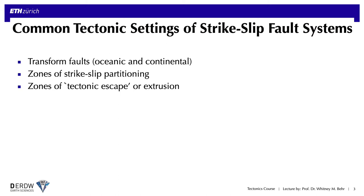Let's start by discussing the common tectonic settings of strike-slip faults. I like to break them down into three categories: transform faults, both oceanic and continental varieties; zones of strike-slip partitioning, where oblique plate boundary motion is accommodated by a combination of strike-parallel and strike-perpendicular structures; and strike-slip faults that develop as zones of tectonic escape or extrusion. We'll go through key examples of each in this module.